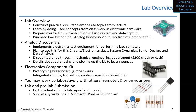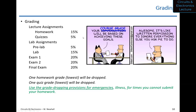Labs are due as posted on the website. There's no hard cutoff, but a late penalty of 20% per day applies. The grading breakdown is: 15% homework, 5% quizzes, 5% pre-lab, 15% lab, and three exams. The lowest homework grade will be dropped and one quiz grade will be dropped — please save those drops for genuine emergencies.